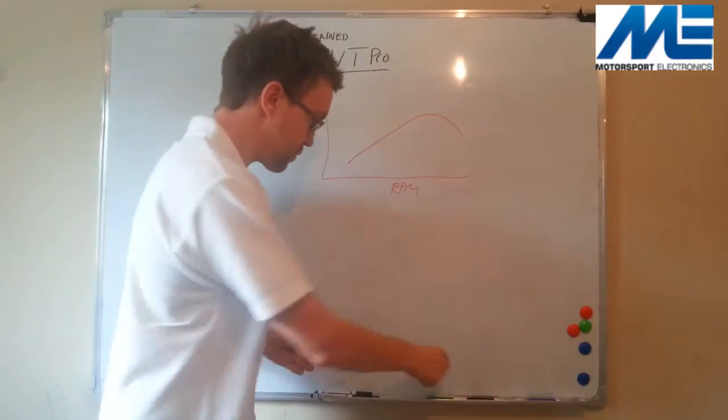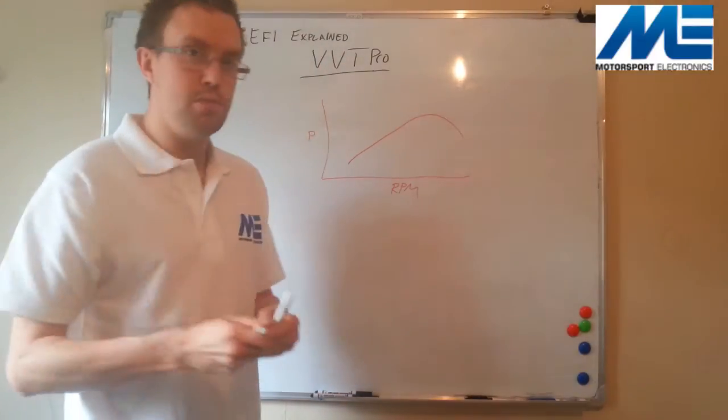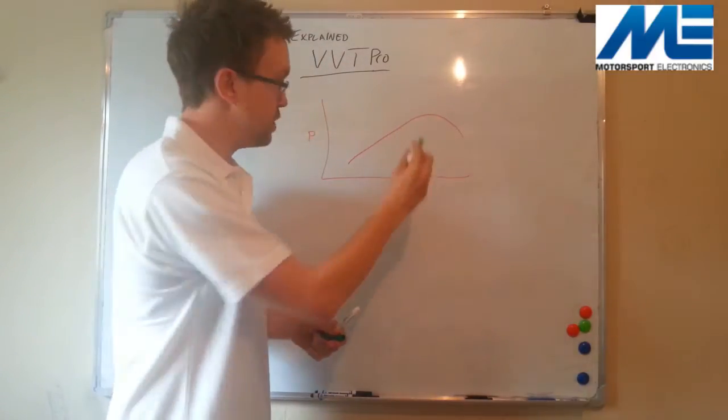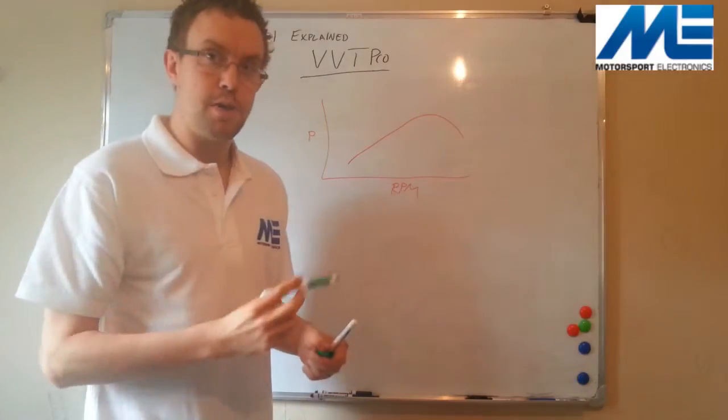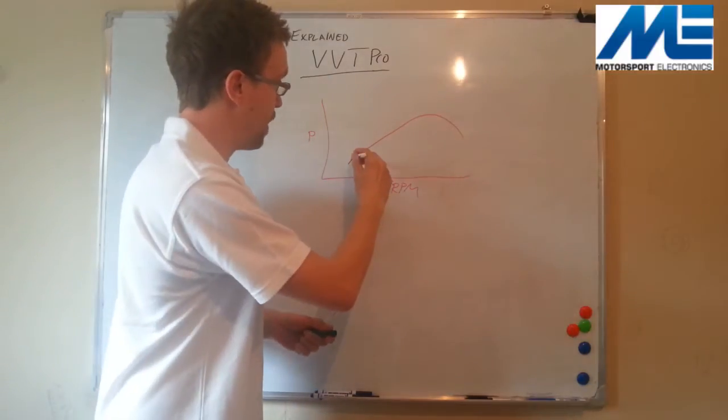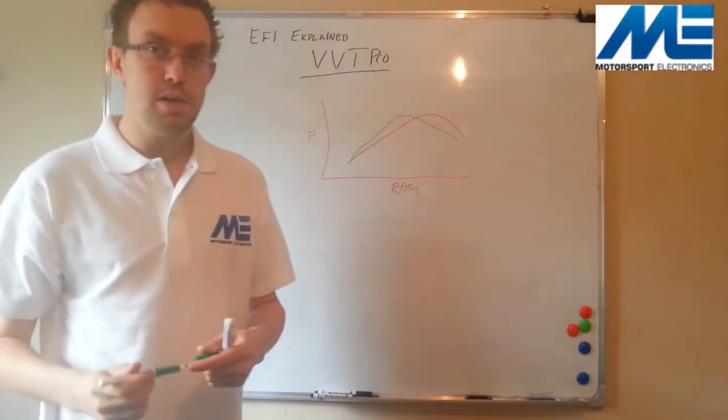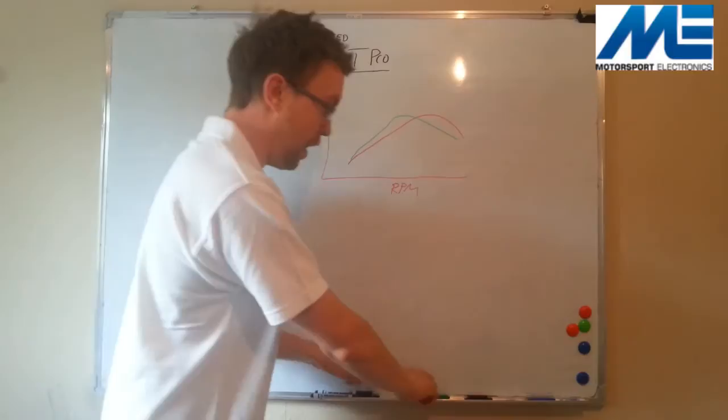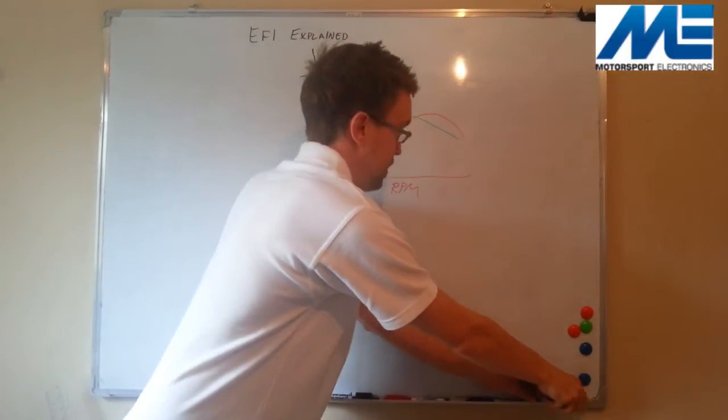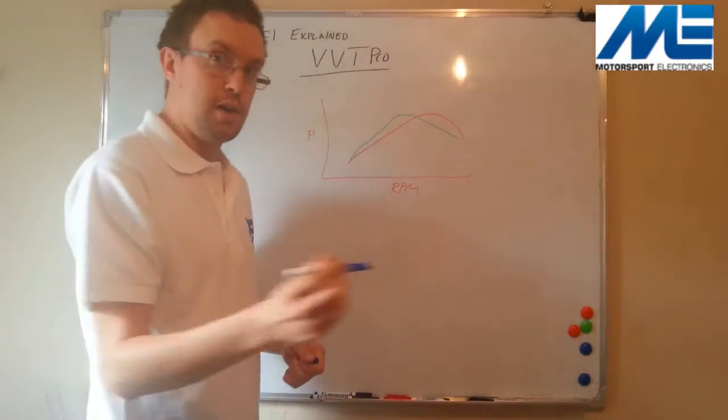If we advance the cam, what will happen is we'll move the peak power of the engine, this point here, closer to the start of the rev range. So the power curve might then look like this. And likewise, if we retard the cam by a few degrees, the power curve might look like this.